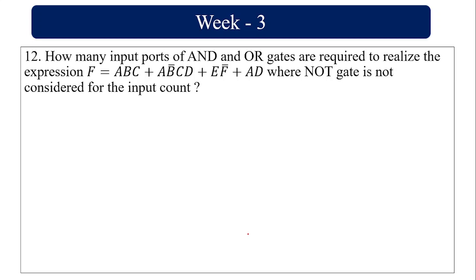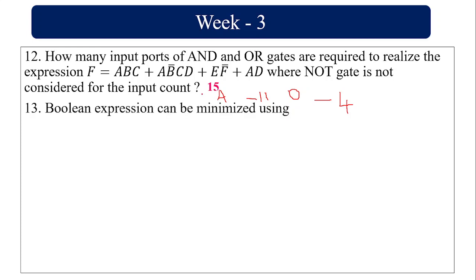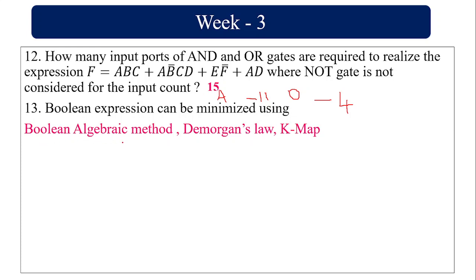For the expression F = ABC + AB̄CD + AF̄ + AD, counting AND gate inputs: first term 3, second term 4, third term 2, fourth term 2 — total 11 AND gate inputs. For the OR gate combining all four product terms, there are 4 inputs. So total inputs required: 11 for AND gates and 4 for OR gate, giving 15 total.